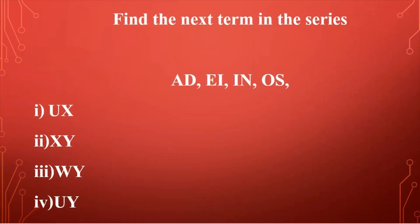The next question: we again have to find the next term in the series — A D, E I, I N, O S. If you look at the first letter in each term, they're all vowels: A, E, I, O — which means the first letter in the last term should be U. Our vowels are A, E, I, O, and U.